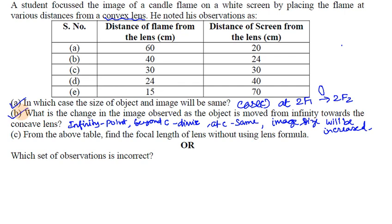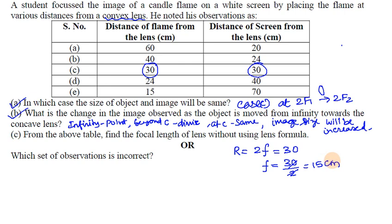From the above table, find the focal length of the lens without using the lens formula. This is simple: at the 2F position, the radius of curvature equals 2 times the focal length. So if 2F equals 30, then F equals 30 divided by 2, giving the focal length of the lens.